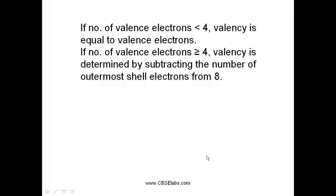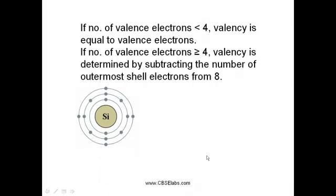Let us look at the electronic configuration of silicon. Here we have 1, 2, 3 and 4 electrons in the outermost shell. So, we have 4 valence electrons.